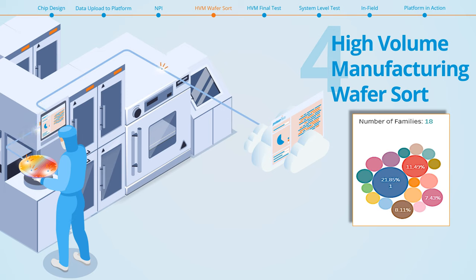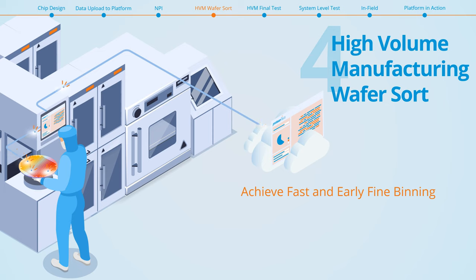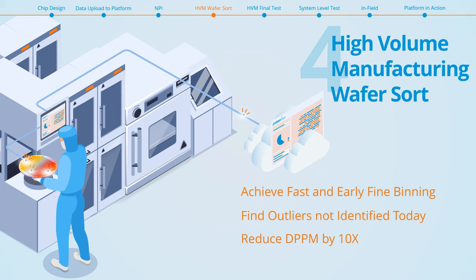This family classification allows fine-grain binning across maximum frequency, power and leakage current along with other uniquely measured parameters such as the remaining margin on millions of internal paths. At the same time, your team can identify outliers that would otherwise lead to costly returns in the field, reducing defective parts per million or DPPM by an order of magnitude.